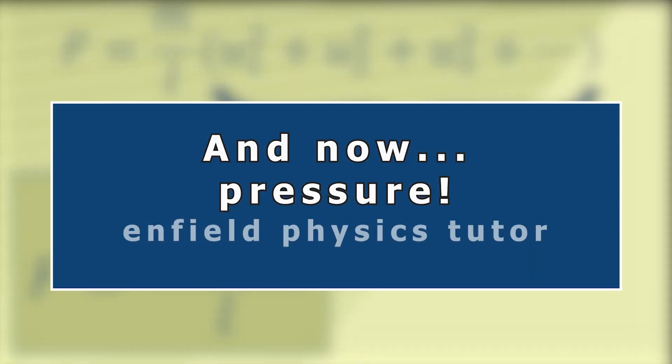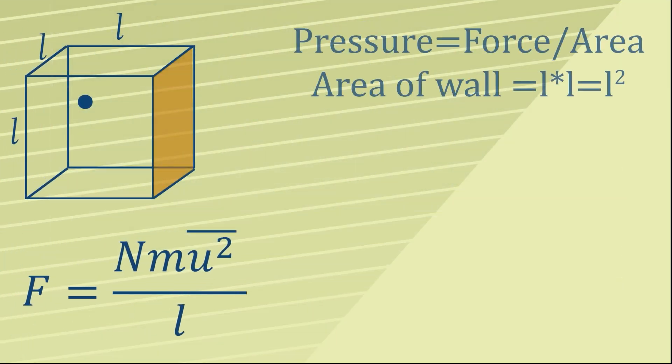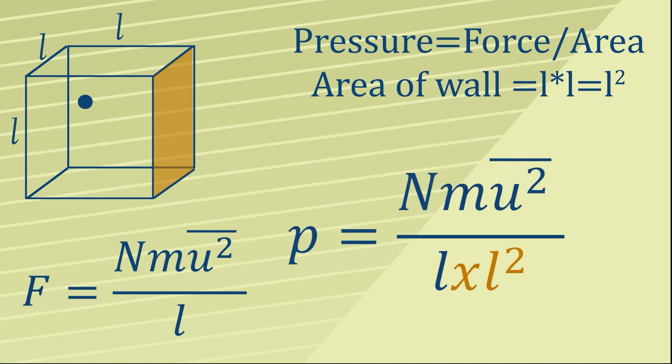Don't forget that what we're trying to do here is to come up with a formula for the pressure inside a box in terms of how the individual particles are moving. But pressure is equal to force divided by the area, and given that we have a cube here, the area of the orange face is simply L times L, or L².